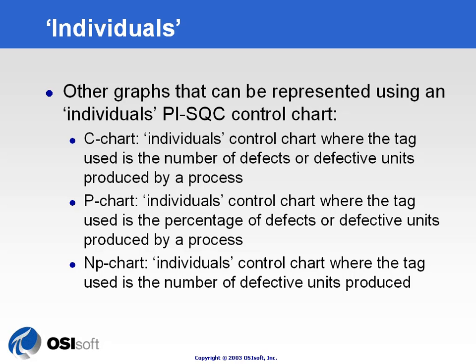This total number of defects could be the value trended on a control chart. You would use individuals because you wouldn't link the number of defects from one specific piece of hardware with the next one — you need to see them separately.